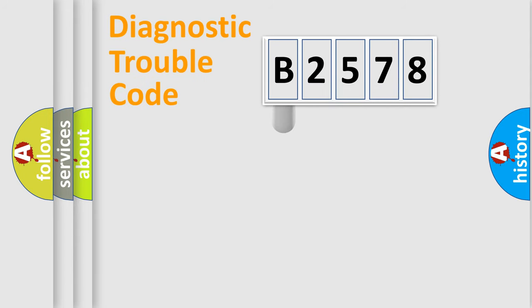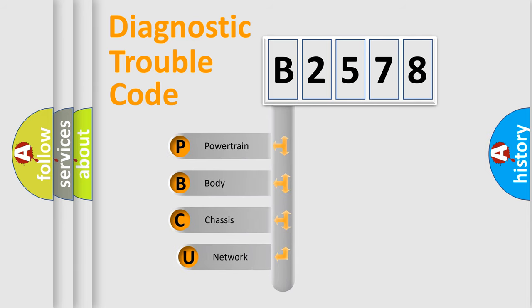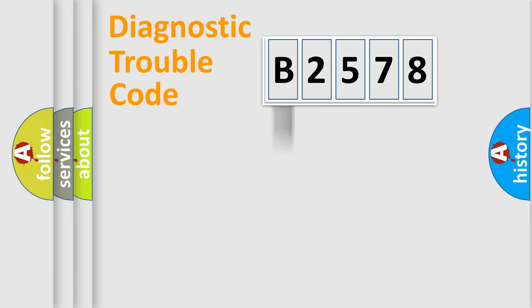Let's do this. First, let's look at the history of diagnostic fault code composition according to the OBD2 protocol, which is unified for all automakers since 2000. We divide the electric system of automobile into the four basic units: Powertrain, Body, Chassis, Network.